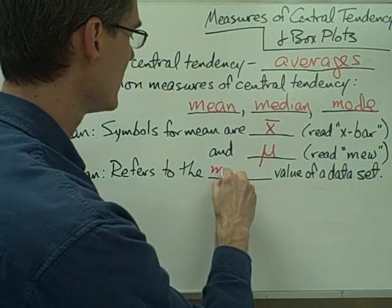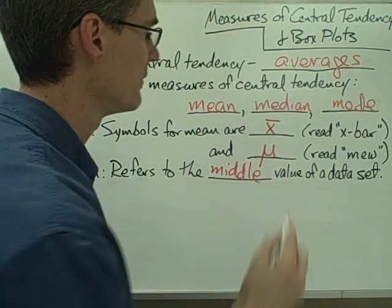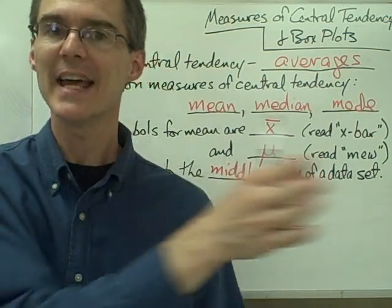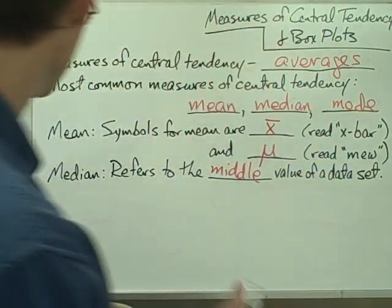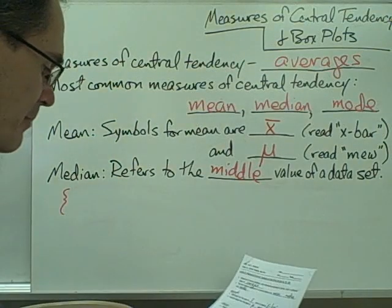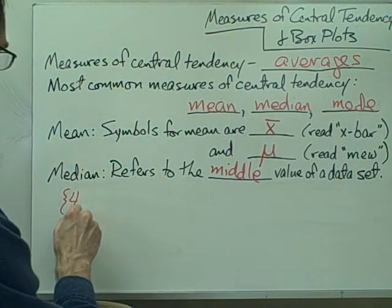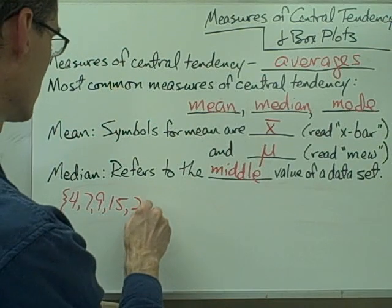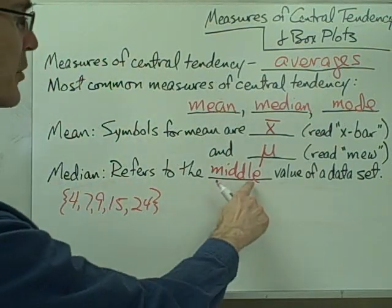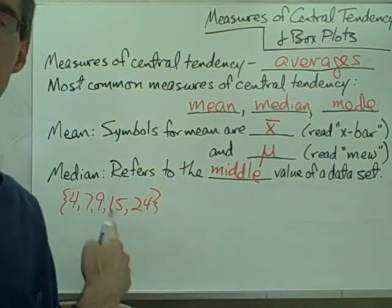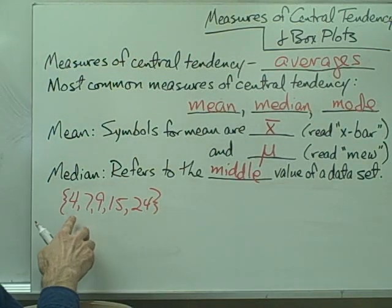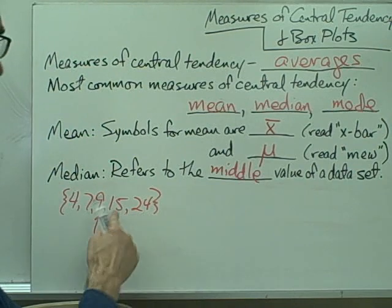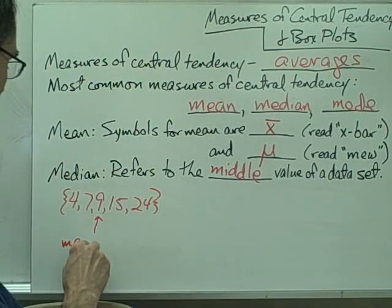Median refers to the middle value of a data set — specifically, the value in the middle after you've ordered all data points from least to greatest. So let's say I have a set of numbers: 4, 7, 9, 15, and 24. Since my numbers are already in order and the median is the number in the middle, I find that 9 is the number in the middle. I've got two values below it and two values above it, so 9 is my median.